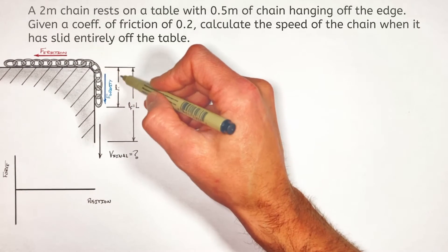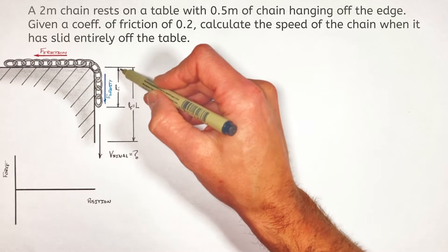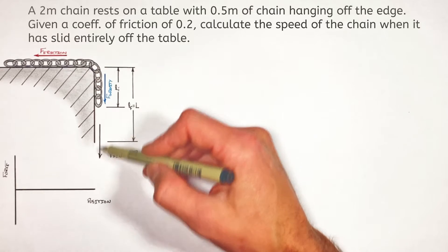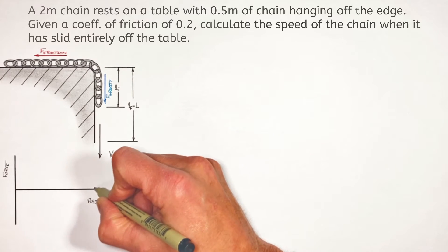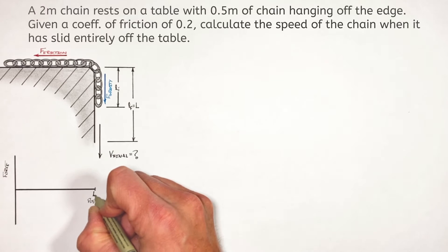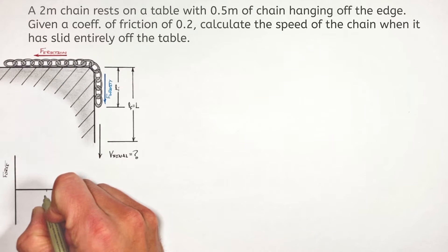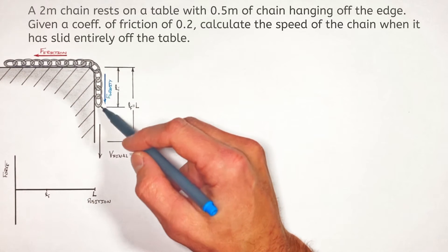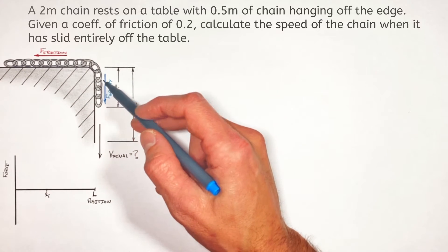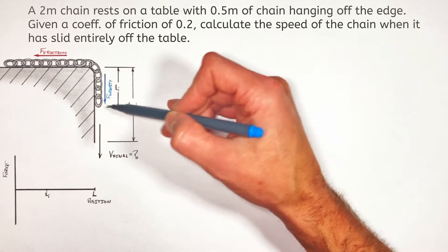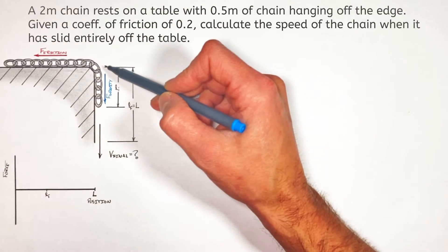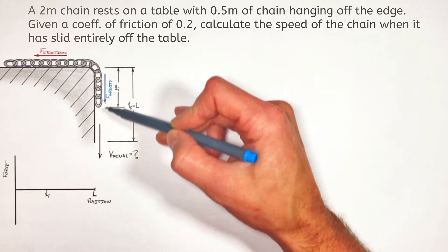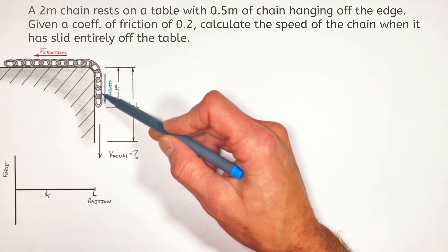We're going to start with some initial length of chain hanging off the edge of this table, which I'll call Li, and let this chain keep sliding off the table until the entire chain has come off. So we're concerned with the magnitude of these forces from some position Li all the way out to L. First, looking at the force of gravity — gravity is acting on every link in the entire chain, but it's the force of gravity acting on the hanging chain dragging everything off the edge of the table that we're concerned with.